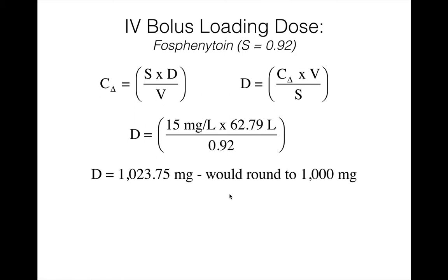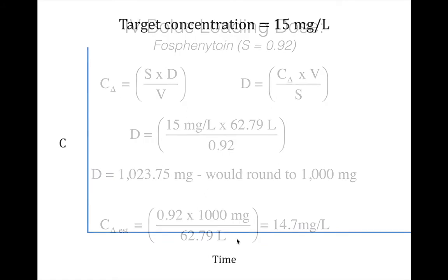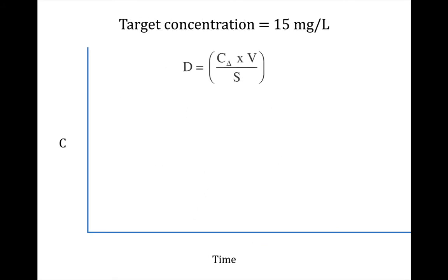When we solve that, it gives us a dose of 1023.75 milligrams, and that would be rounded to 1000 milligrams. Of course, if we round the dose, the predicted C change would also be affected. So we can go back into the original formula and solve for the C change estimated using 1000 milligrams, and that would be 14.7 milligrams per liter. We could also do this by ratio, which would be 15 times 1000 over 1023.75.